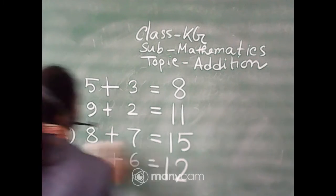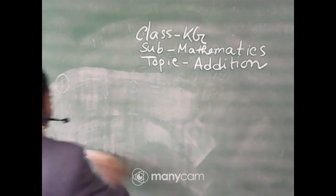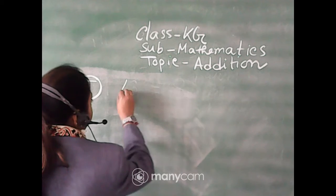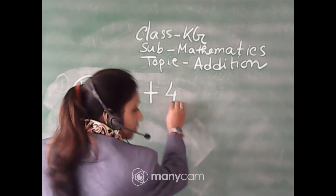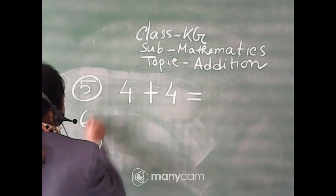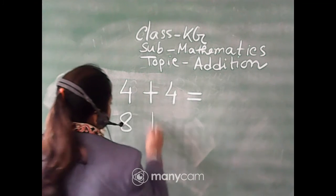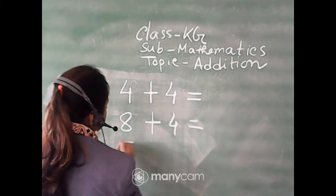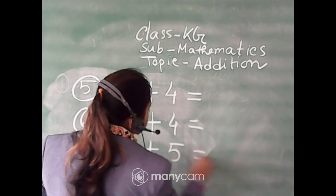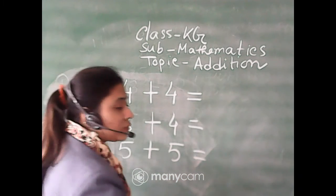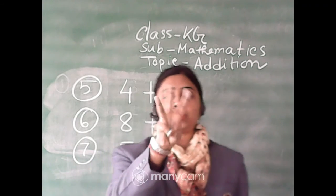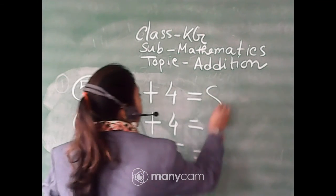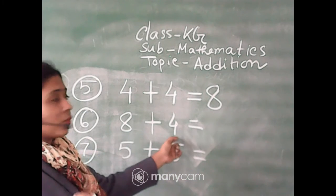We have completed four additions. Now the next ones: number five is four plus four, number six is eight plus four, and one more is five plus five. Starting with four plus four — both sides are the same number. So four fingers: one, two, three, four, and counting on four more: five, six, seven, eight. So four plus four is equal to eight.